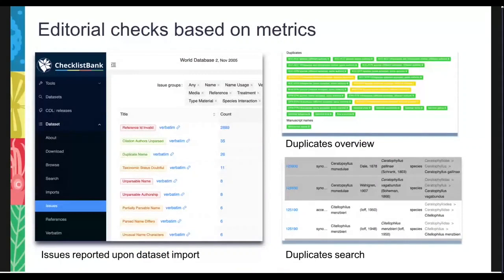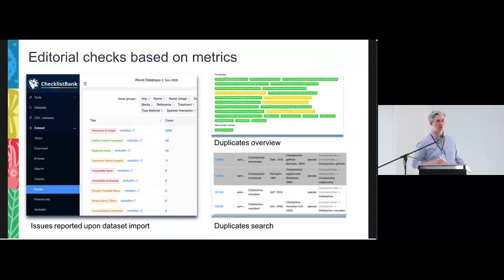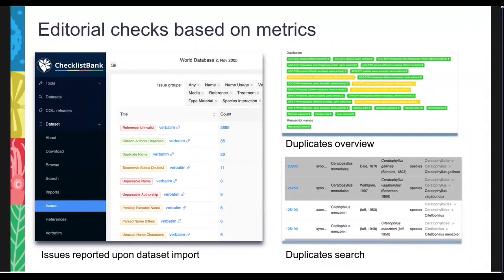At the level of ChecklistBank, once you import data into the infrastructure, you get back a list of issues telling you what's going on with the data. Catalogue of Life editors use this to check the data pipelines, go back to the data provider, clean up data, and republish. It also provides an overview of the duplicates in that dataset, and you can search on those duplicates to investigate them further.